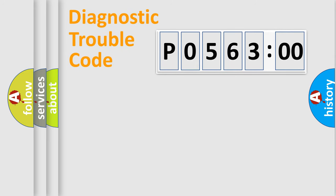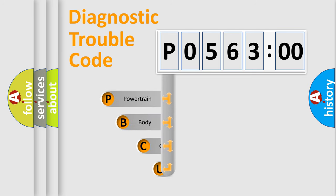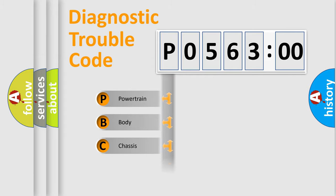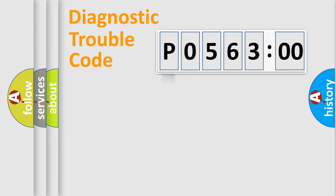Let's do this. First, let's look at the history of diagnostic fault code composition according to the OBD2 protocol, which is unified for all automakers since 2000. We divide the electric system of automobile into four basic units: Powertrain, Body, Chassis, and Network.